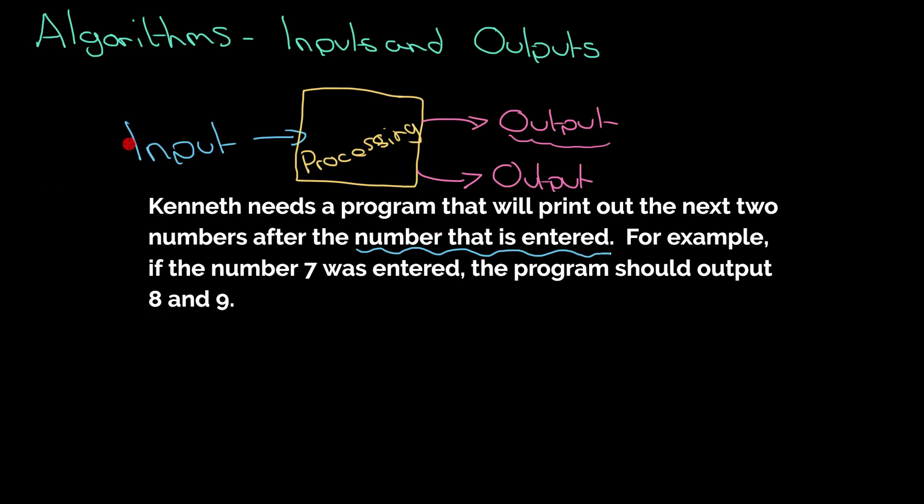it should become fairly clear that we're entering a number because it says after the number that is entered. Outputs, it says here, will print out the next two numbers. So we know we're printing out two numbers and it's actually going to be the next two numbers. And that gives us a bit of a clue as to what the processing is as well, which we'll come on to in a little bit.